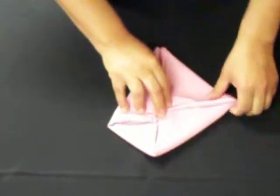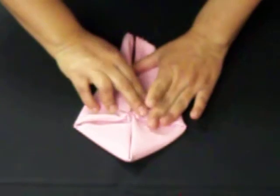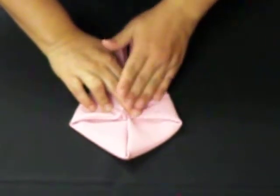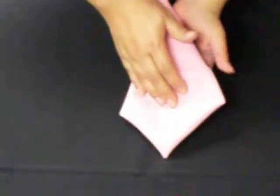You're going to do the same on the left side. Bring it to the center. You're going to hold it right in the middle. Slowly flip your napkin over.